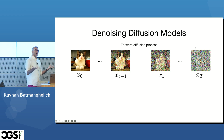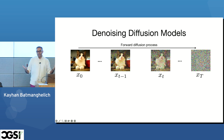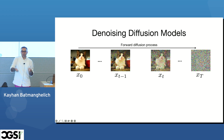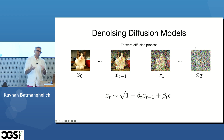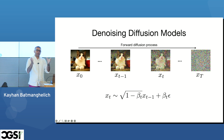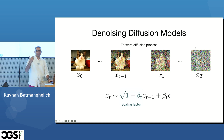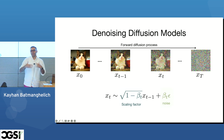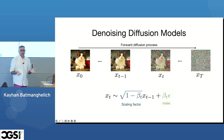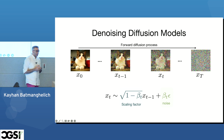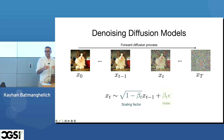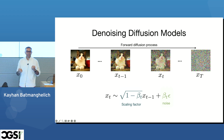The general idea is: you start with a dataset image x₀, and incrementally add noise to it. At each step, the previous image is scaled and Gaussian noise is added, until the image becomes indistinguishable from a random draw from a noise distribution. This is called the forward diffusion process. There are no learnable parameters here — beta is just a predefined scheduling procedure.